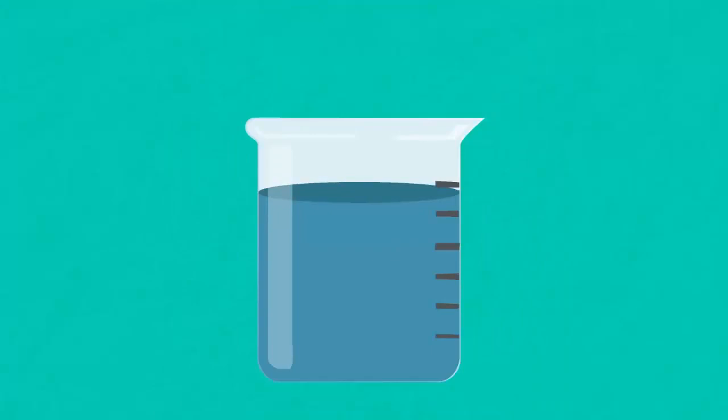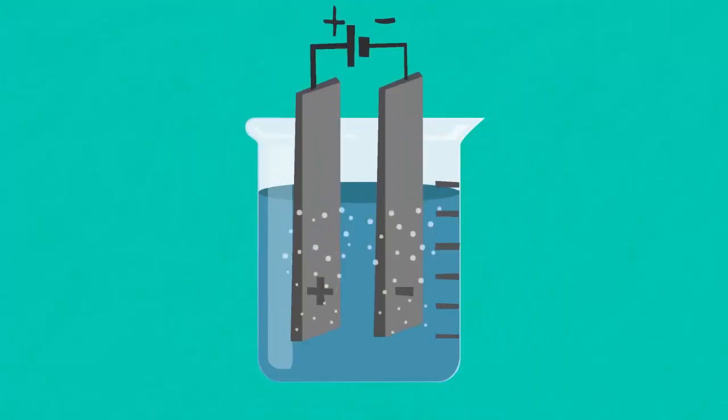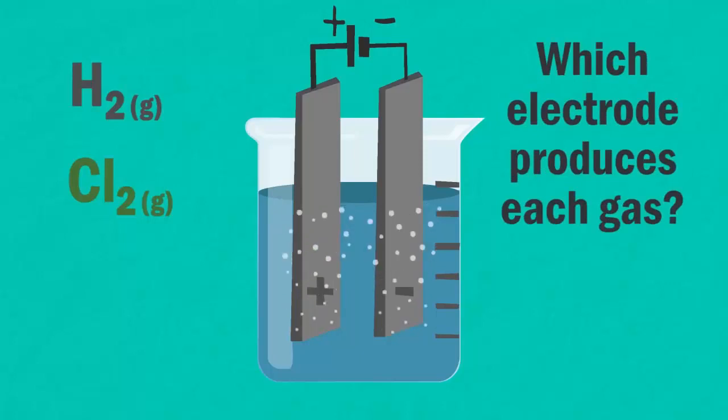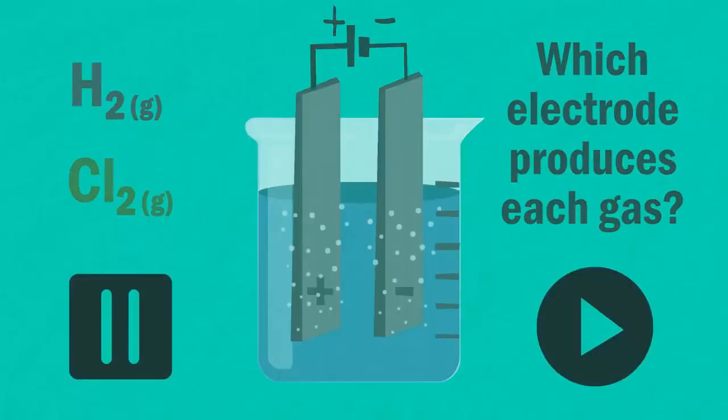When the current flows you will begin to see tiny bubbles of gas forming at each electrode. Both hydrogen and chlorine gas are formed. But can you work out which electrode produces which gas? Pause the video and see if you can work it out.